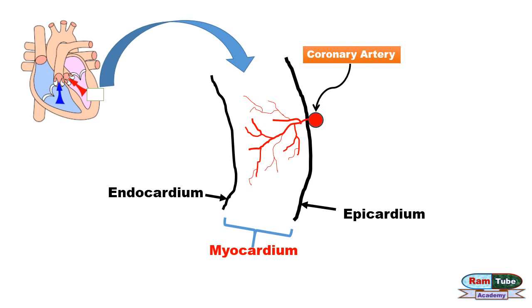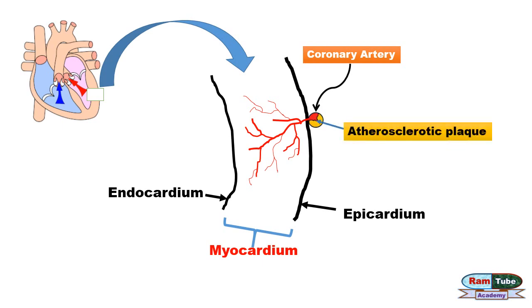The most common cause for angina is atherosclerosis. Atherosclerosis is a condition in which fatty substances like cholesterol build up inside the blood vessels and form atherosclerotic plaques.